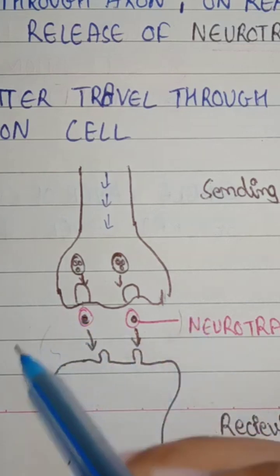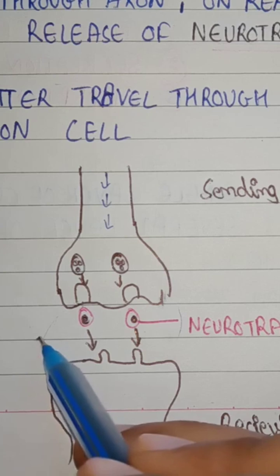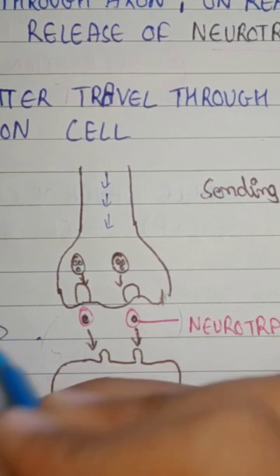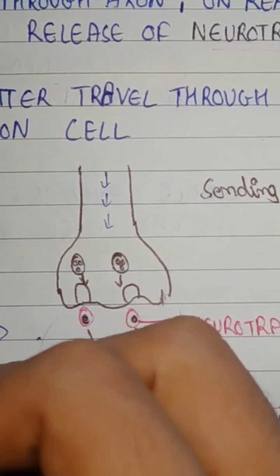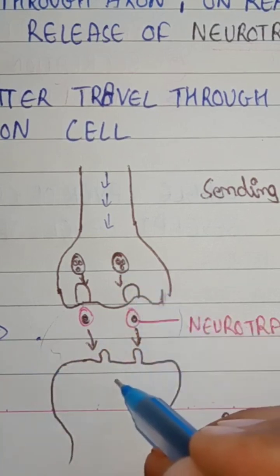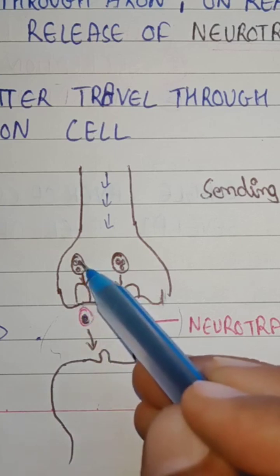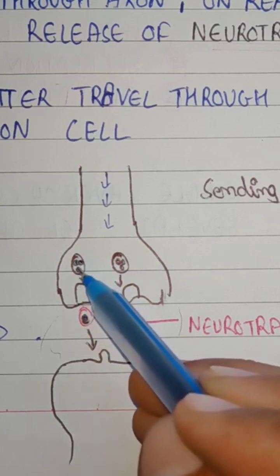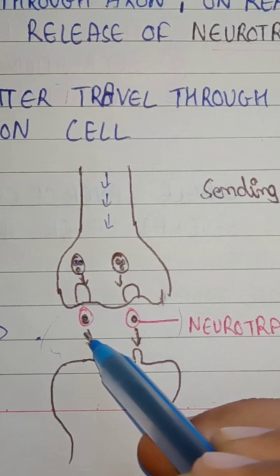This space is called a synapse. A synapse is a gap by which two neurons are connected. The neurotransmitters, or small chemicals, are released in this synapse.